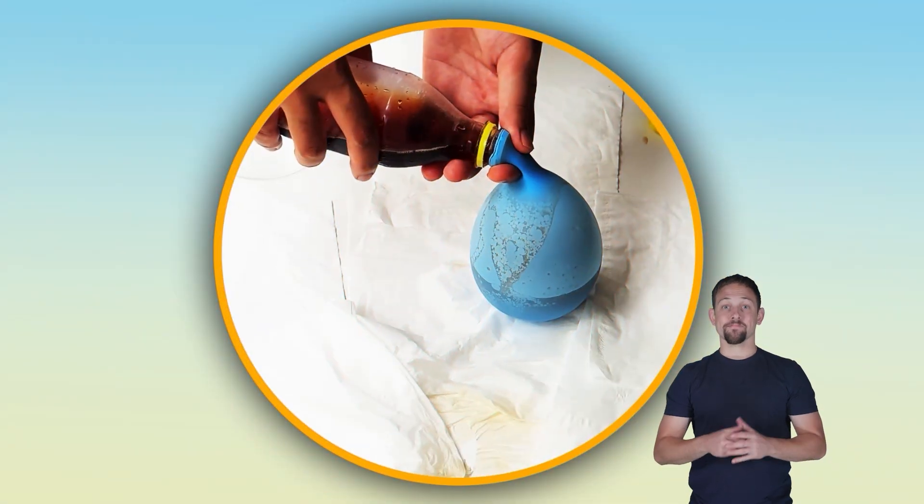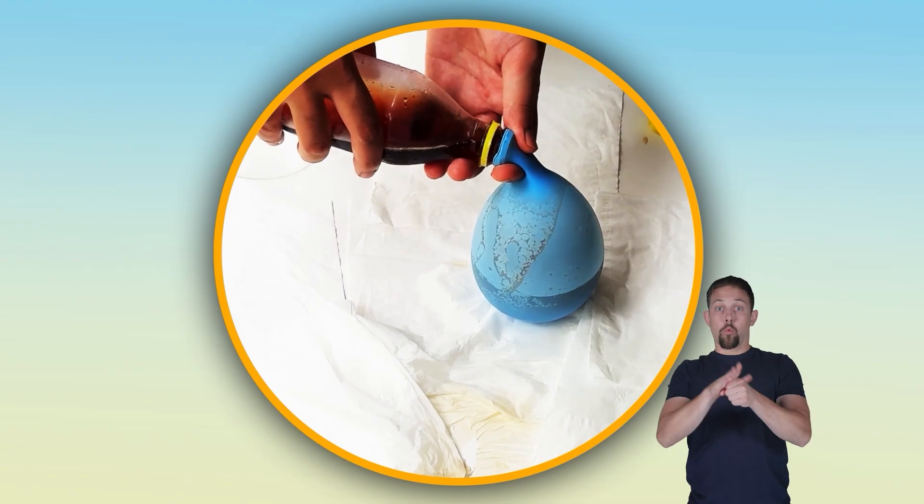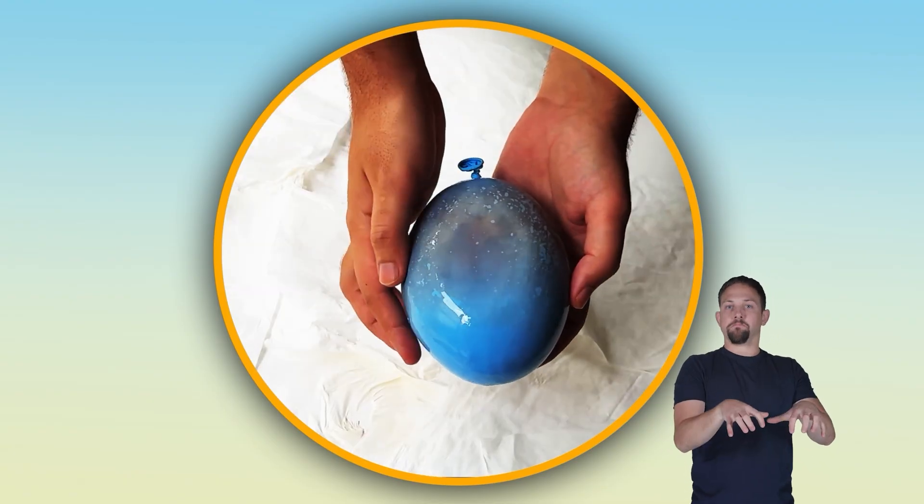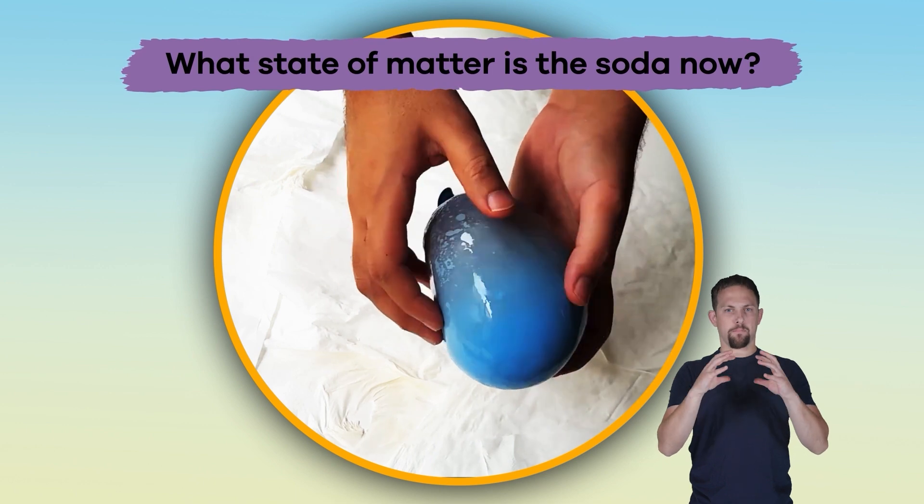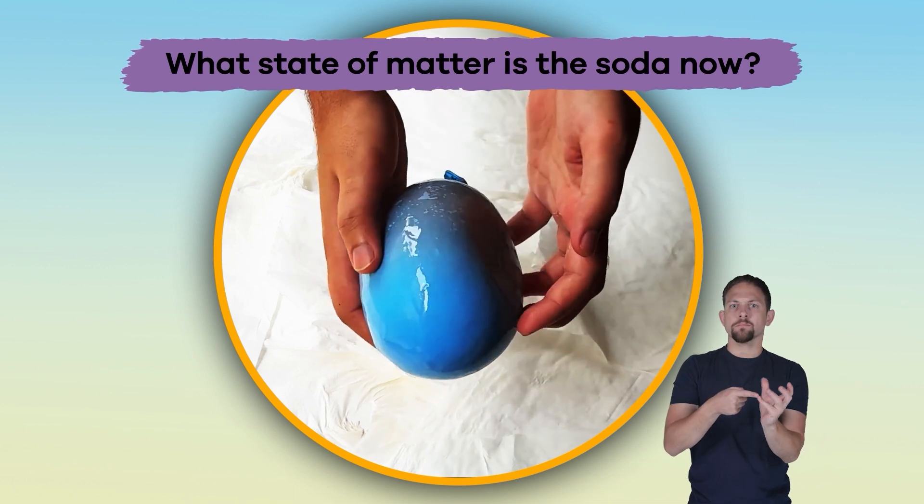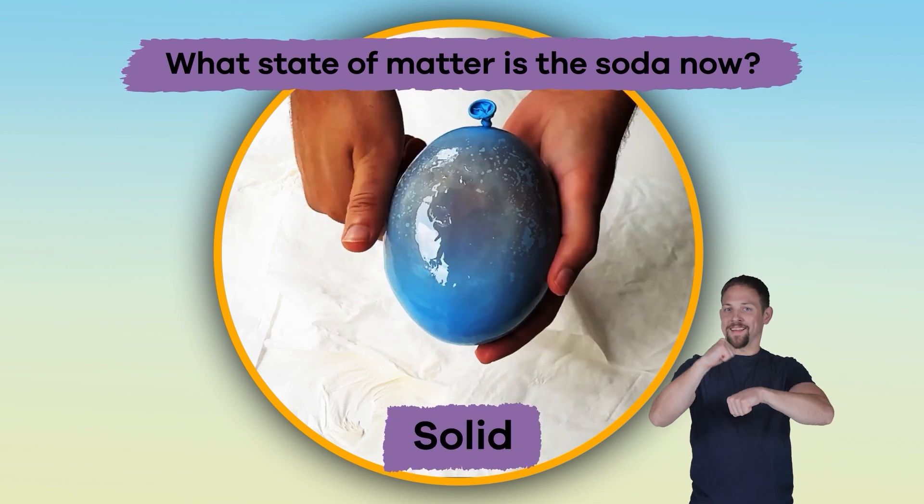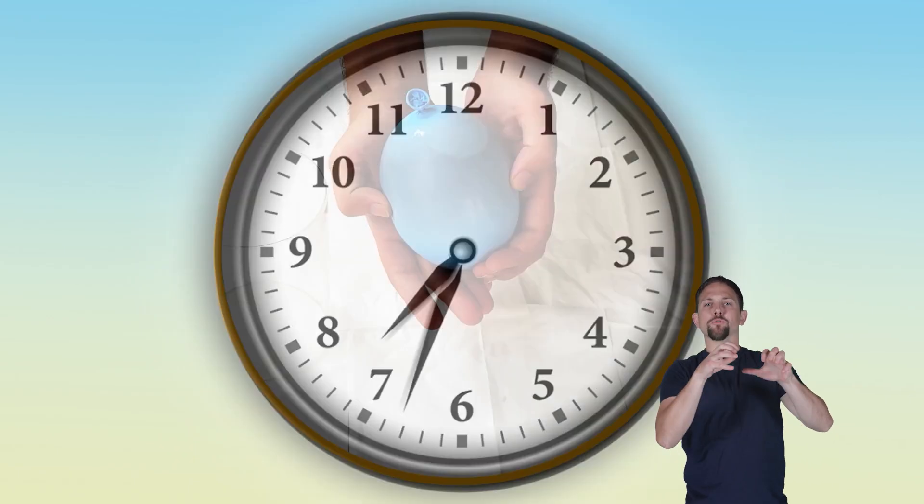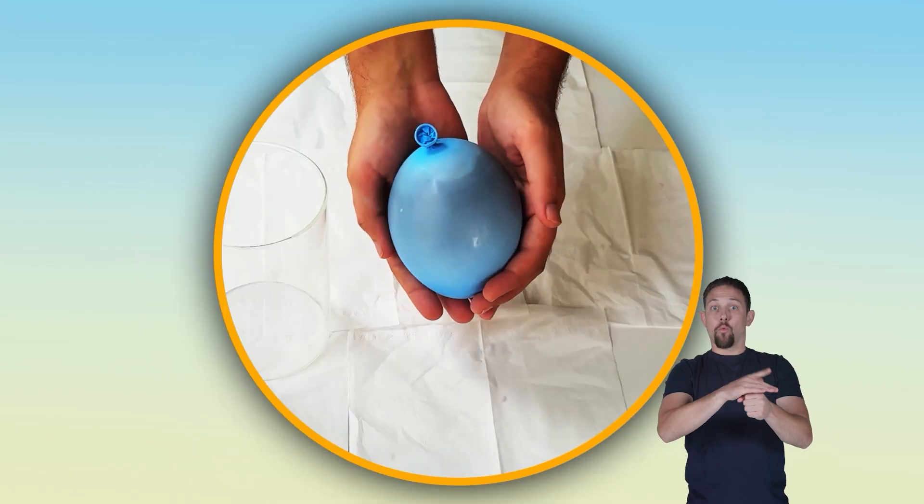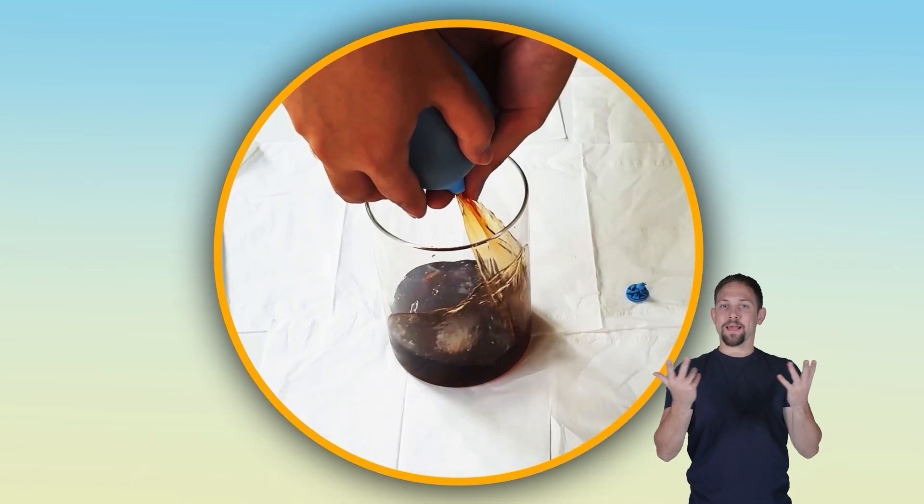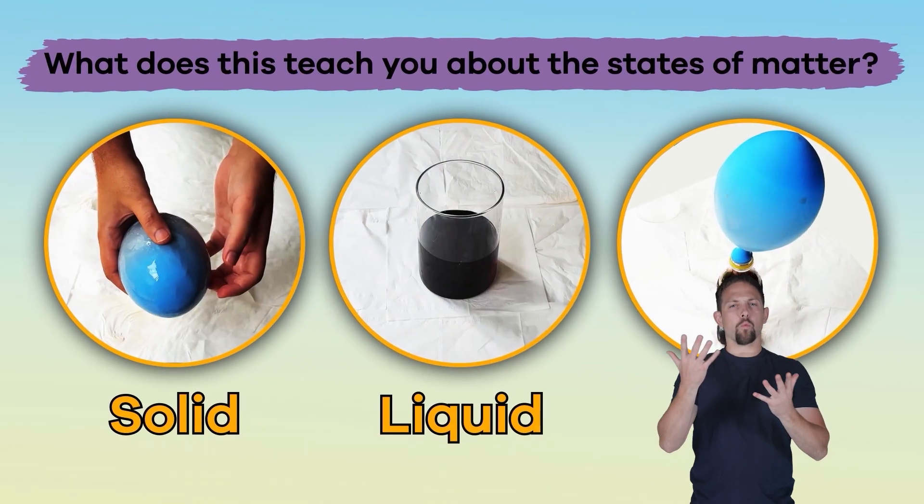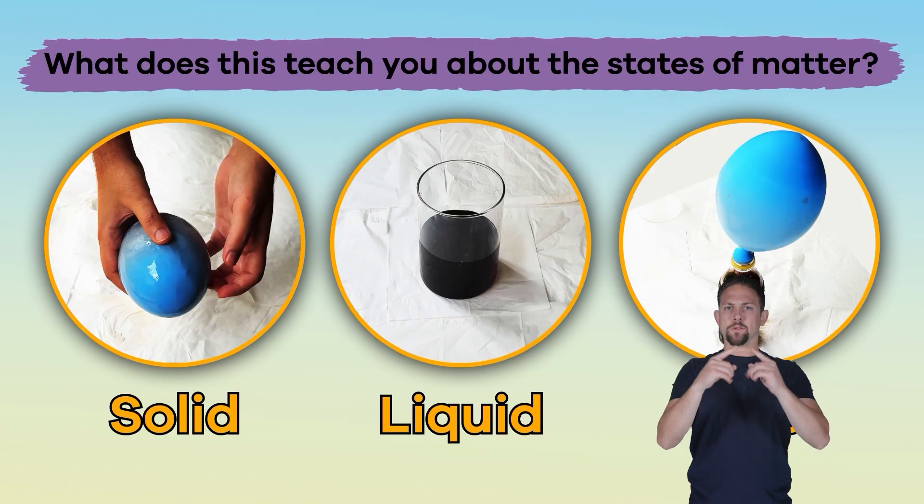Now we are going to tip the soda into the balloon, tie it off, and freeze it. What state of matter is the soda now? It's a solid. What happens if you leave the balloon out on the counter for a while? Now the soda has melted back into a liquid state. What do you observe and what does this teach you about the states of matter?